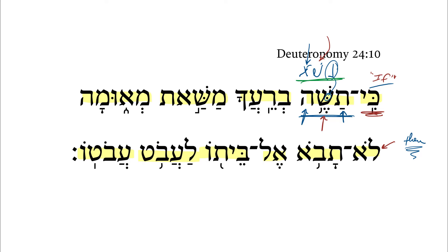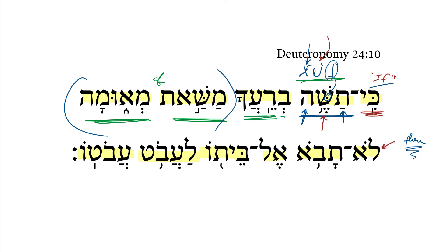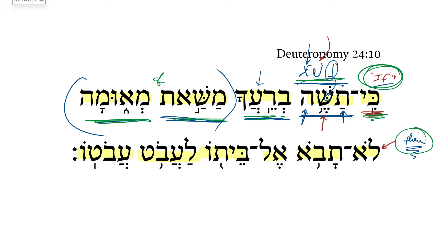You shall not lend out to your friend — or with your friend — a pledge of something, or a loaned item on pledge of any kind. You shall not loan out on pledge to your neighbor a loaned pledge item of any kind. Now, all of that is the 'if' clause: if you do that,